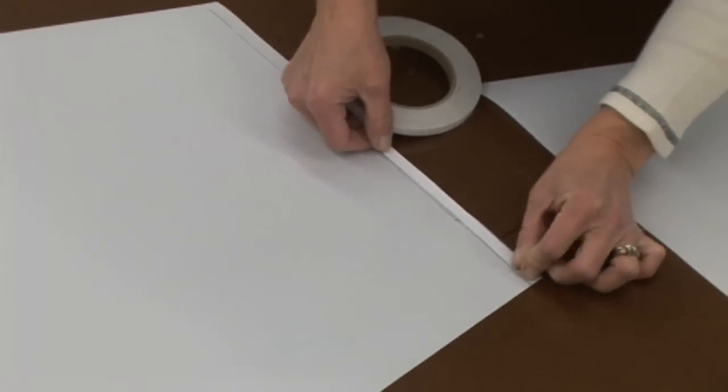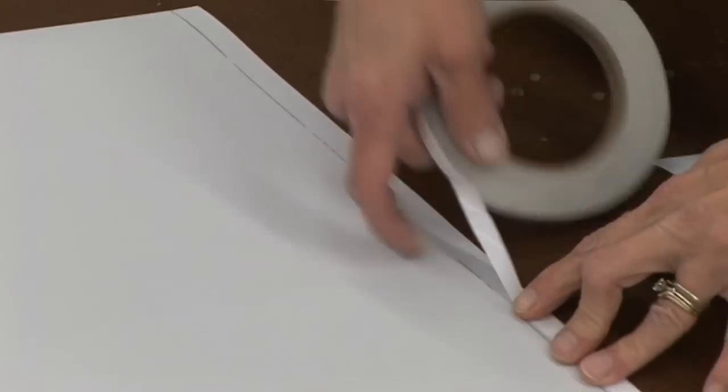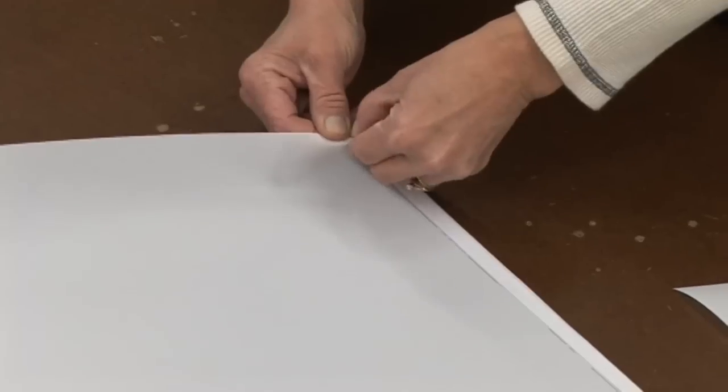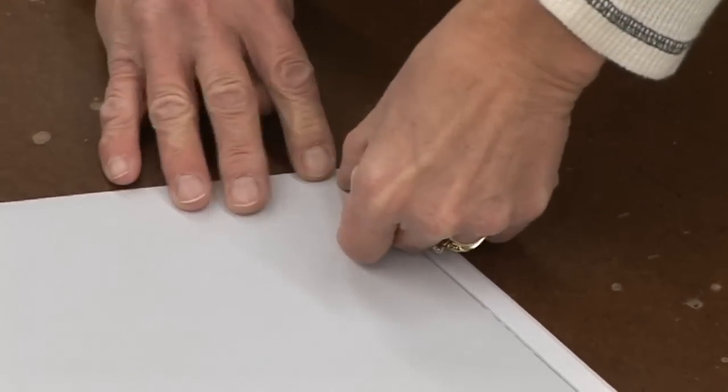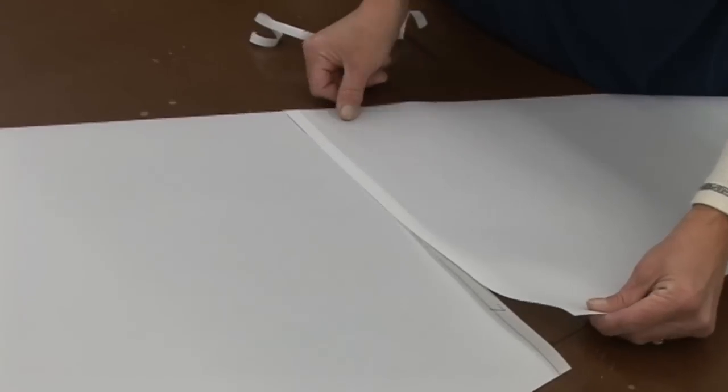Then you can baste the rest of the sail together in sections. Obviously some panels have to be basted and sewn together before you can actually apply the patches, like here at the head. This head patch actually extends into two panels, so those two panels have to be basted and sewn together before we can apply the head patch.